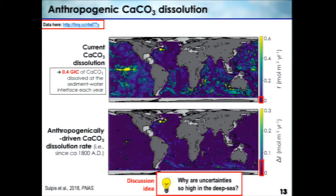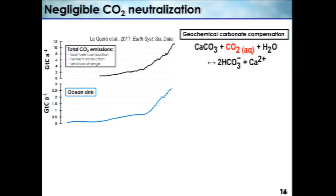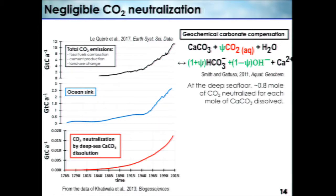Here is a discussion idea: why are the uncertainties so high in the deep sea? We can go back to that in the panel discussion. Now I want to discuss the question we were asking at the beginning: how does that relate to all the carbon we are putting in the atmosphere and the ocean? To compute the neutralization rate of CO2, we have to use that equation but modify it a little bit, because in reality some of that carbonate ion produced by dissolution will actually react back and give some CO2. It's very well described in a paper by Smith and Gattuso. We just have to add a coefficient of about 0.8 in the deep ocean — it's a bit higher in the surface ocean. That means that for every molecule of calcite dissolved in the deep ocean, we have about 0.8 molecules of CO2 being neutralized.